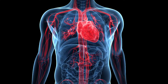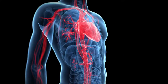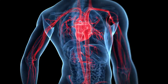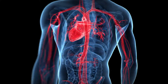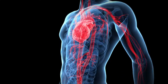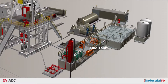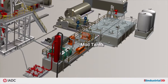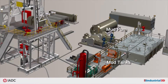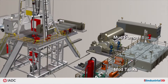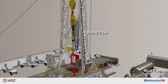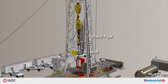Like the circulation system in the human body, a rig's circulation system ensures that the correct fluids reach the correct part of the body. The rig circulation system consists of several components that together methodically and efficiently deliver drilling fluids into the wellbore throughout the drilling process.